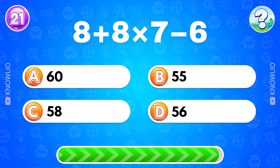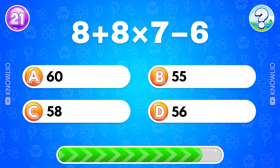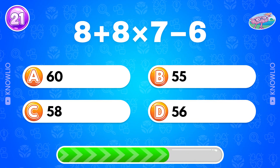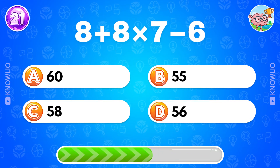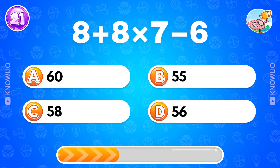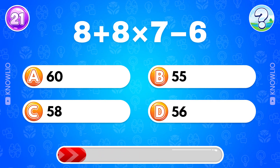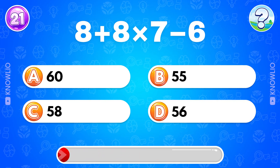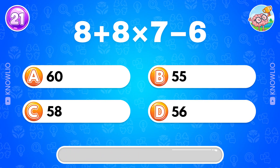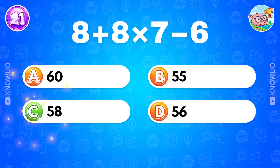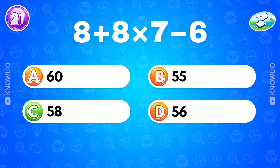This is the hard level, time to shine. 8 plus 8 multiplied by 7 minus 6. Answer C: 58.